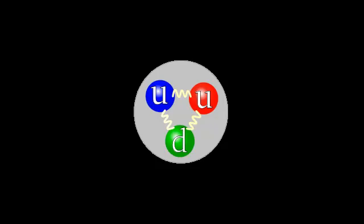For every quark flavor there is a corresponding type of antiparticle, known as anti-quark, that differs from the quark only in that some of its properties have equal magnitude but opposite sign.